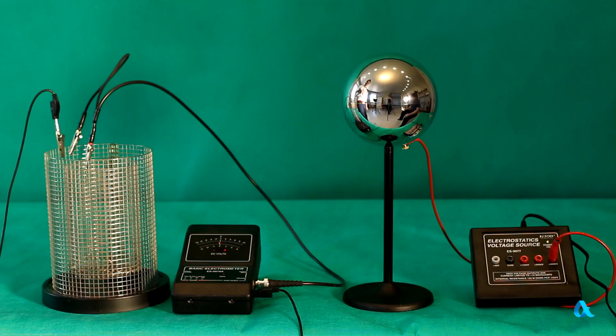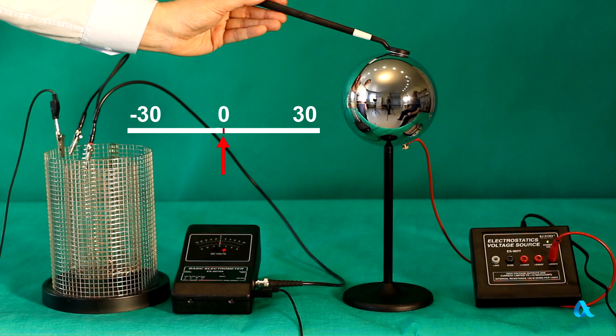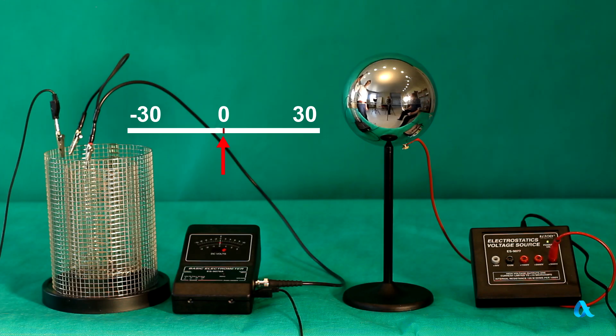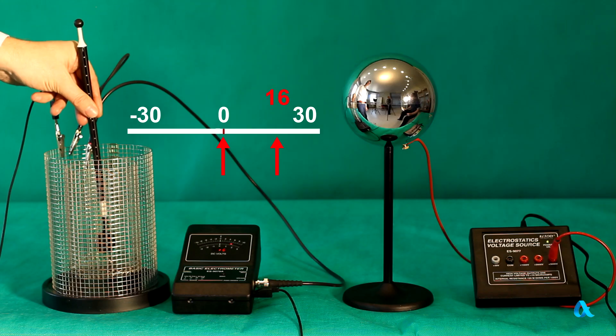In this experiment we're going to obtain a charge in a different way. We connect a sphere made of metal to a source of electrostatic stress and it has a positive electric charge now. If we touch the sphere with a metal plate, a part of this charge will move onto it. When we put the plate inside the cage, the electrometer registers that the plate carries a positive charge.